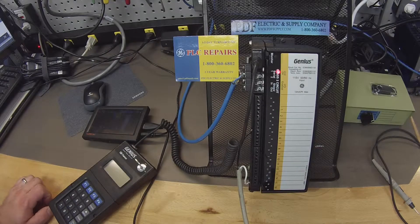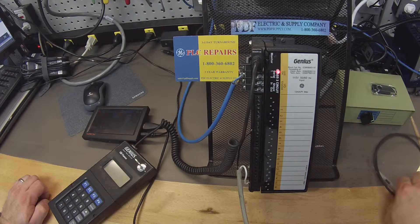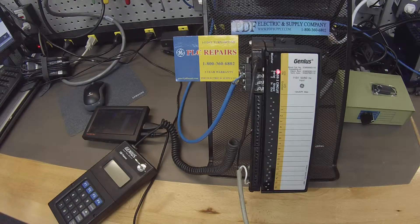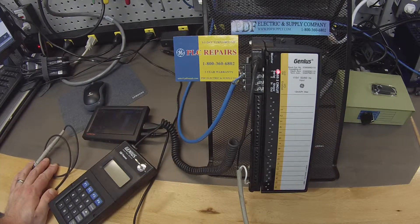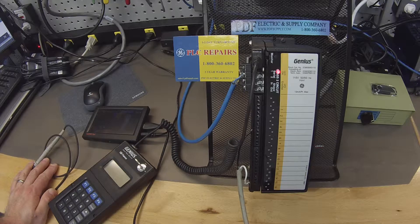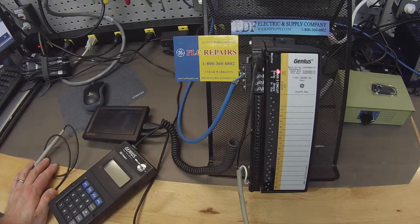Hello and welcome to pdfsupply.com. Today we're going to be testing an IC660 BBD110. This is a 16 point input 115 volt AC discrete genius block.